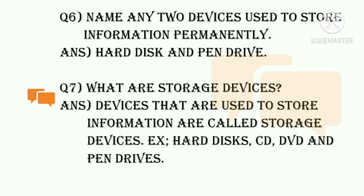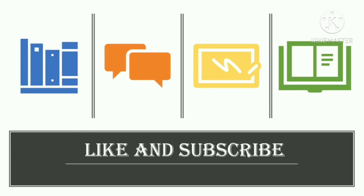Question six: name any two devices used to store information permanently. The answer is hard disk and pen drive. Devices that are used to store information are called storage devices — examples are hard disks, CDs, DVDs, and pen drives. Hope it helps you.